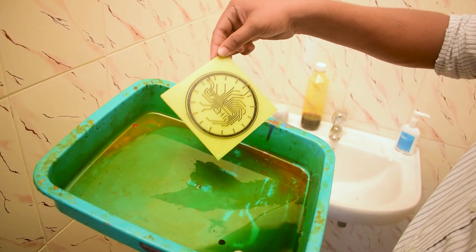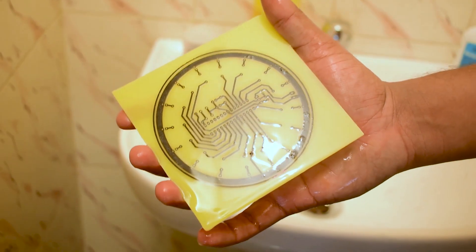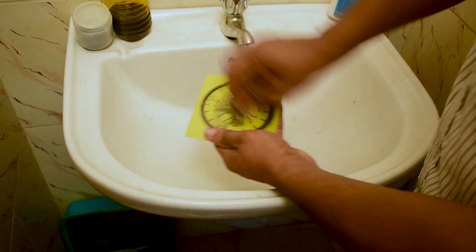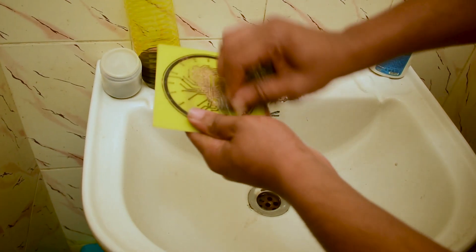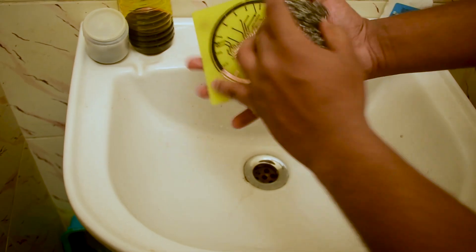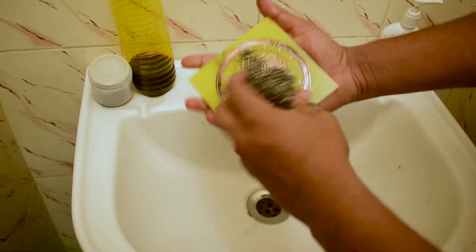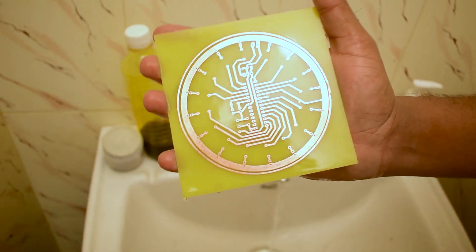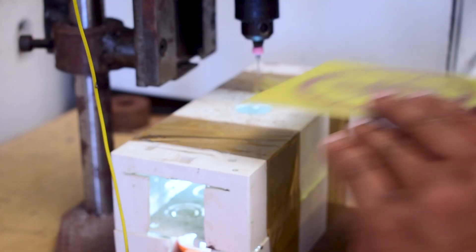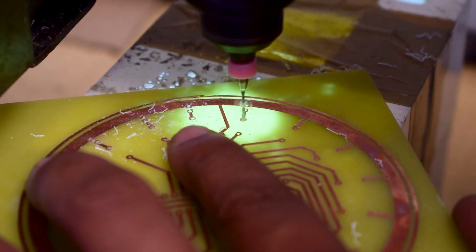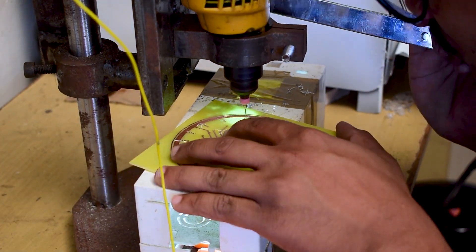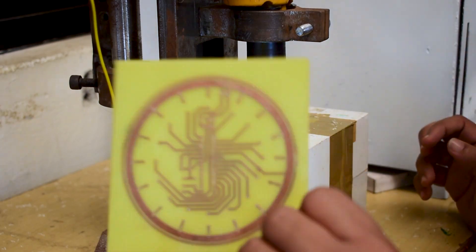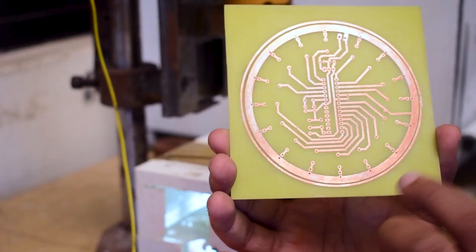Let's wash the board with running water. After that, we can remove the ink from the board using a scrubber revealing the copper trace. Be careful, do not damage the copper trace while using the scrubber. We have completed the etching process and the PCB is ready. Let's drill the holes for placing the components. The components list for this project is given in the description. Solder the components and the circuit board is ready.